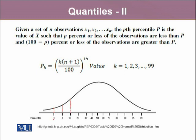p1 is a value that has only 1% data below it. p5 is a value that has 5% data below it. And similarly p50 is actually a value that has 50% of the data below it and 50% data above it. Similarly p90 is a value that has 90% below and 10% above.